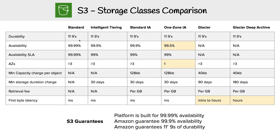For availability, it's 99.9% until we hit One Zone-IA. For Glacier and Glacier Deep Archive, it's not applicable because it's just going to take a really long time to access those files. So availability is indefinitely slow — we're not going to put a percentage on that.